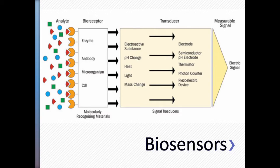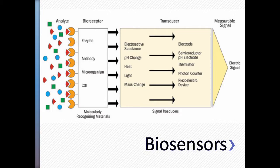What are the signals? It can be an electrical change — for example, in an enzyme-catalyzed reaction. Once the reaction happens, you have movement of electrons, and that movement of electrons is sensed as an electroactive signal. That movement of charges is sensed by your electrode, which is your transducer, and then it becomes a measurable signal. It can also be a pH change — basically a potential difference between the inside and outside of the membrane — detected by a pH electrode or a semiconductor pH electrode.